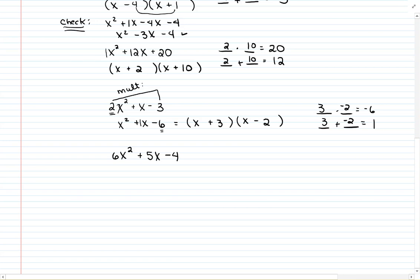If I were to foil this out though, I'm not going to get back my original problem of 2x² + x - 3. I can see right away x times x is x². It's not 2x². So, here's where you've got to go back and fix it. You multiplied by 2 to get this started. You divide each of these by 2. Each of these numbers by 2. Reduce.